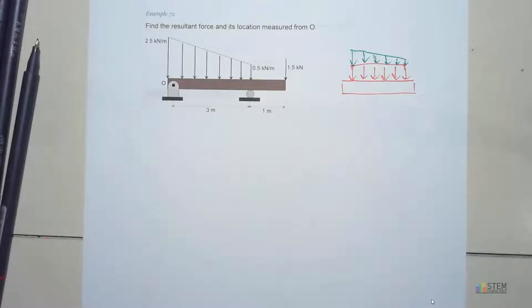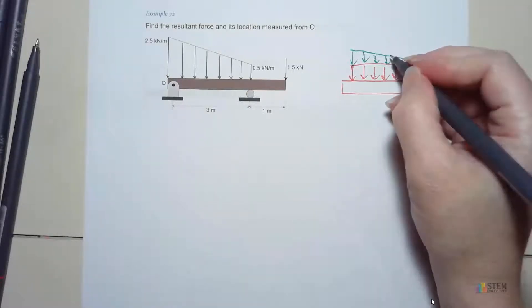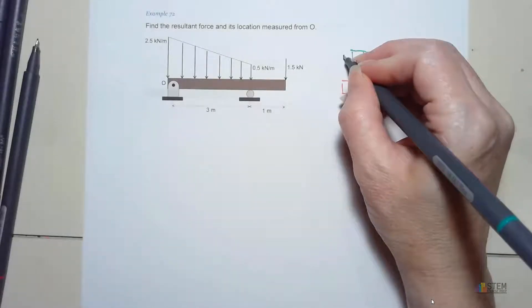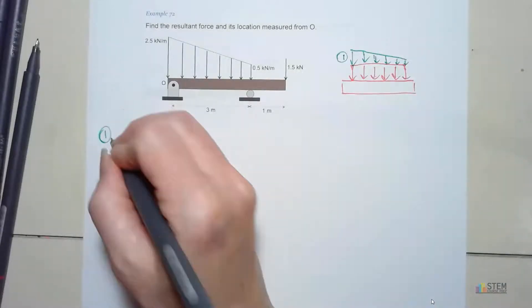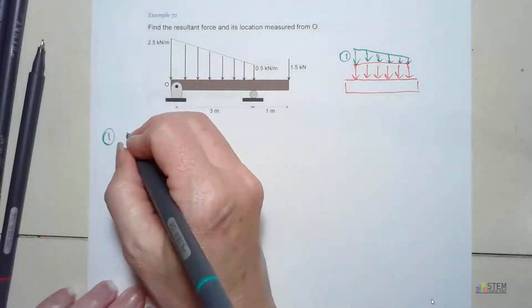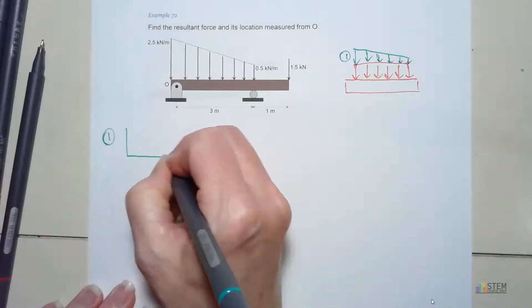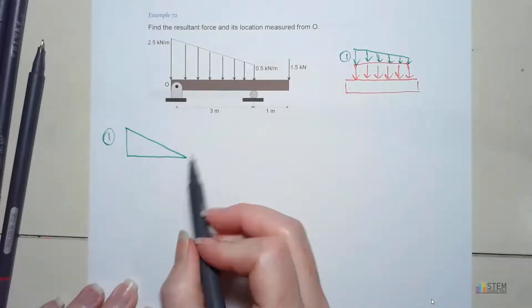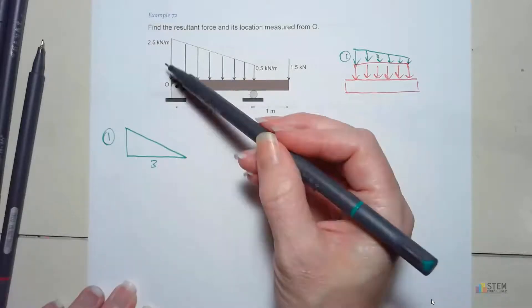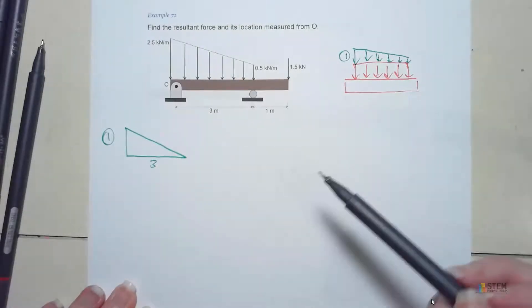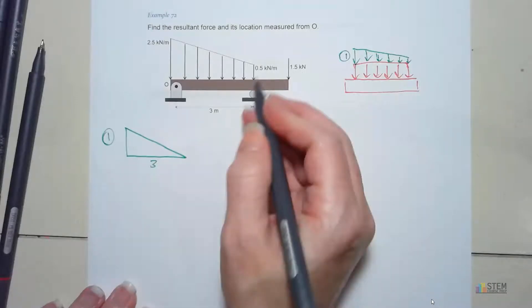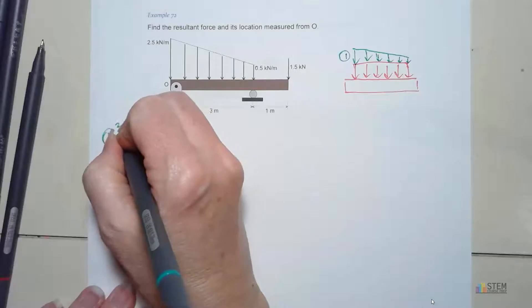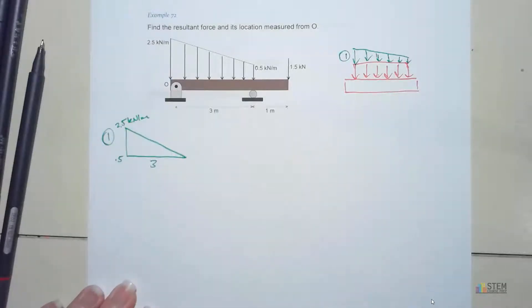Alright, so let's analyze each of those. Let's go ahead and do this triangle part first. So I'm going to call this 1. So for 1, we've got the triangle. Let's draw that out. Now, this length here is 3, so let's put 3, and then now we need to find this height of the loading.